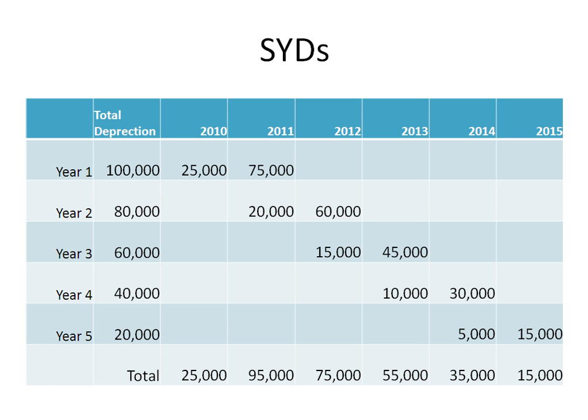That's how to use the sum of the years' digits in this example. I hope this helps. This table setup is something I also use when doing double declining balance — I figure out my total depreciation, then how much of that goes in one year and how much goes into the next year. Good luck.